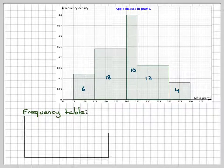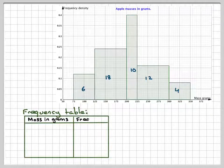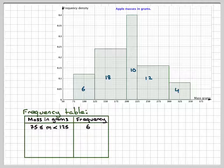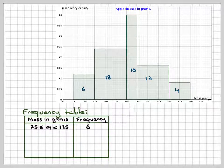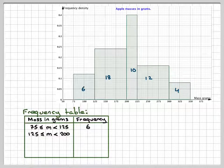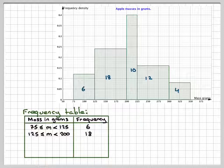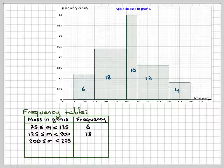So the frequency table, we've got the mass in grams and the frequency. So we're going to go from 75 to 125, and that is represented by 6. We're going to be 125 to 200, that's going to be represented by 18. And then 200 to 225 is going to be represented by 10.